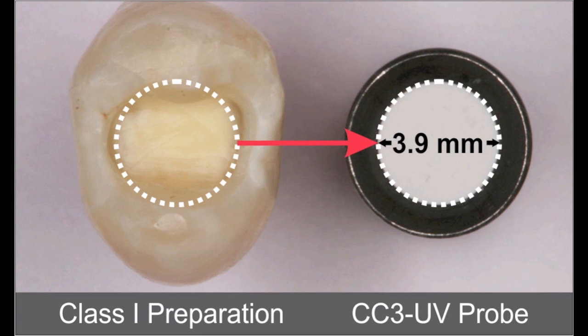The diameter of this sensor was very similar to that of a restoration, and thus this study accurately recorded just the irradiance that a restoration would receive, and not the irradiance that is delivered to other parts of the tooth or mouth.